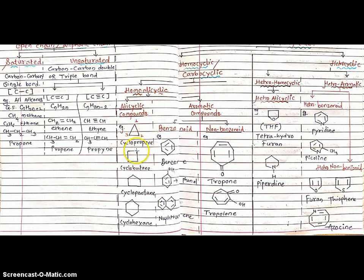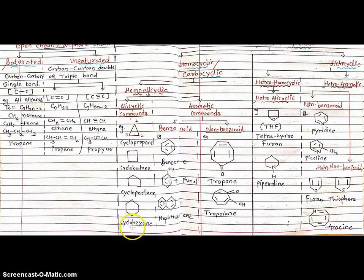Next example: one, two, three, four — total four carbons — called cyclobutane. Next example: one, two, three, four, five — total five carbons — called cyclopentane. These are alicyclic or homocyclic cyclic carbon-carbon single bonded rings.